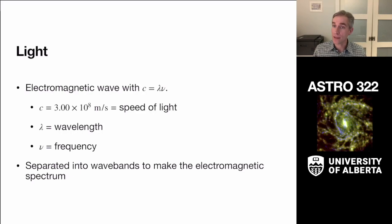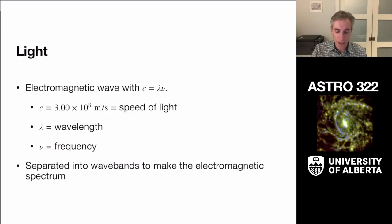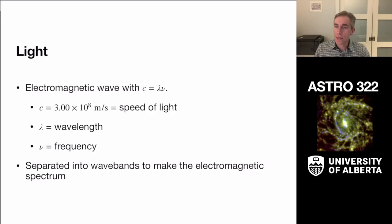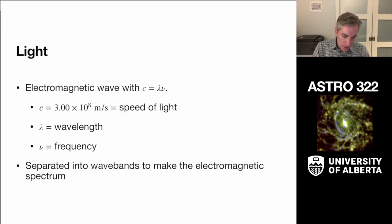We'll also learn a little bit about particles and some gravitational waves. Light is our bread and butter for observational astronomy. While other things are coming online and giving us new insights, light remains the key to studying the universe. We have a huge amount of information produced in light — any accelerating charges will produce electromagnetic radiation that we can observe. We are primarily concerned about light as it moves through a vacuum.